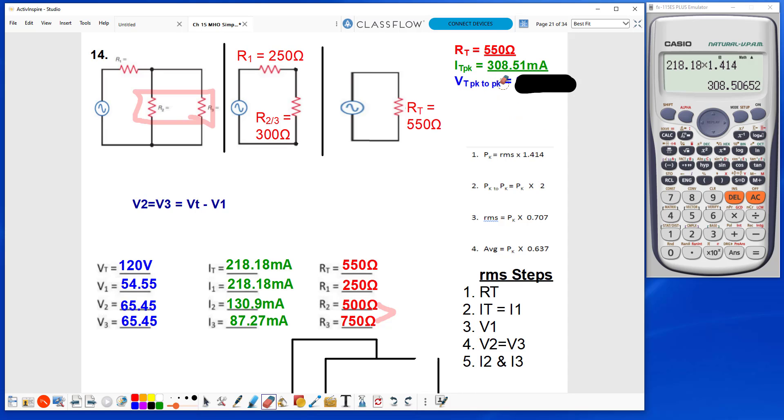Now I need the VT peak to peak. I have a VT RMS of 120 times 1.414. This will give me my VT peak of 169.68.